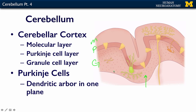The molecular layer doesn't have a lot of neurons in it — it has some, but not very many. It mostly has the dendritic arbor — all of these dendrites that are extending from this giant Purkinje cell. And here's another one. The Purkinje cells live in the Purkinje cell layer. The Purkinje cells are amazing; they extend this huge dendritic arbor.